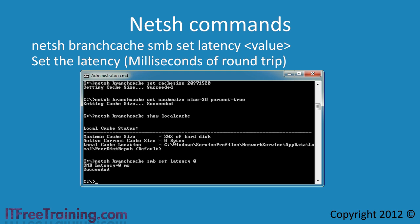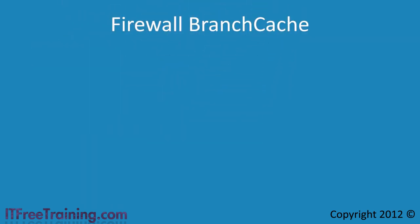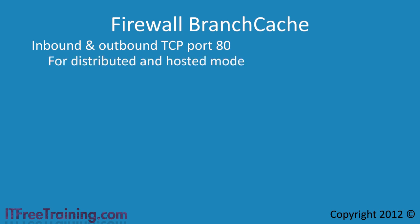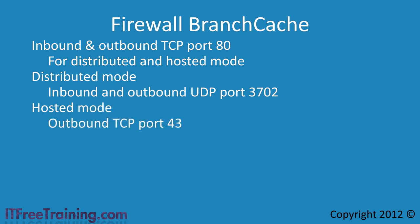If you use NetSH, you will not need to configure the firewall. If however you use Group Policy, you will need to configure the firewall either manually or through Group Policy. Branch Cache needs certain ports open, which can change depending on which mode it is running in. Port 80 must be open for inbound and outbound traffic regardless of which mode you use. If you use distributed mode, you also require UDP port 3702 open for inbound and outbound traffic. If you use hosted mode, you only require TCP port 443 for outbound traffic.